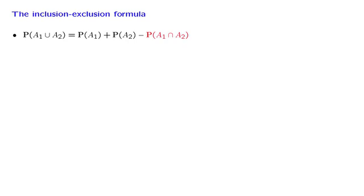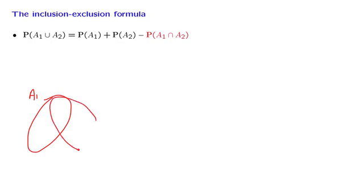In this segment, we develop the inclusion-exclusion formula, which is a beautiful generalization of a formula that we have seen before. Let us look at this formula and remind ourselves what it says. If we have two sets, a1 and a2, and we're interested in the probability of their union, how can we find it?